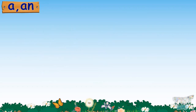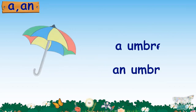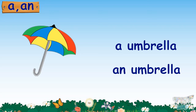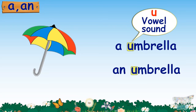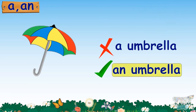Remember, kids, if there is a singular object, then we have to use 'a' or 'an' before it. This is the picture of an umbrella. Umbrella starts with the vowel sound U, so we will choose 'an' and say: this is an umbrella.